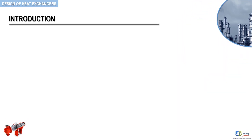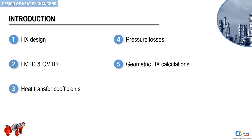Now that we have built a strong understanding of the working principles and mechanical components of shell and tube heat exchangers, it is time to devote our attention to how to design this type of heat transfer equipment. This section is built with over five parts, and each part tackles a different aspect of shell and tube heat exchanger design. You can think of this section as a practical guide for solving daily problems that you will encounter at your facility.